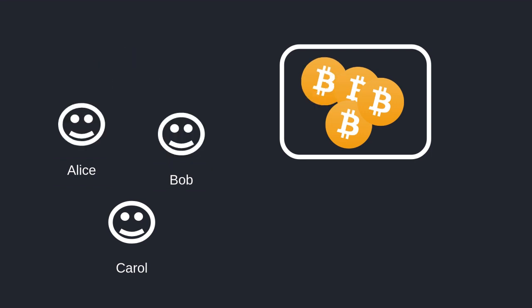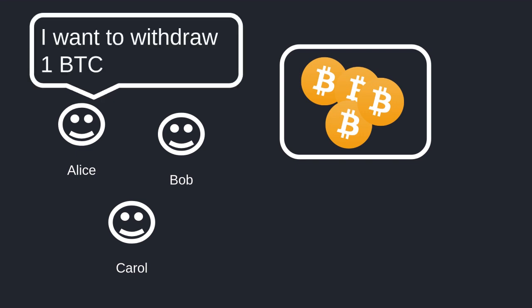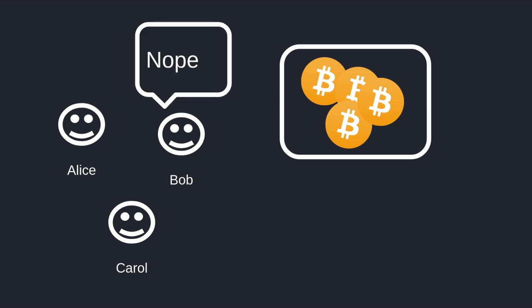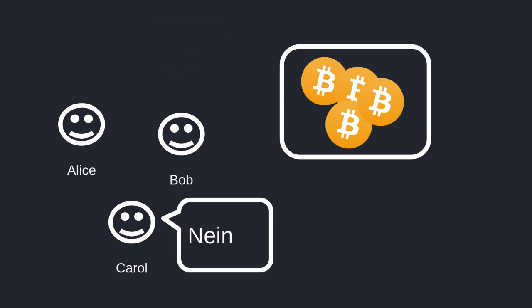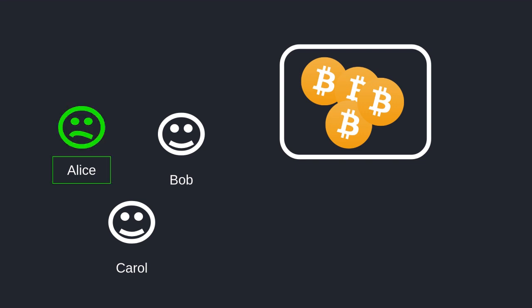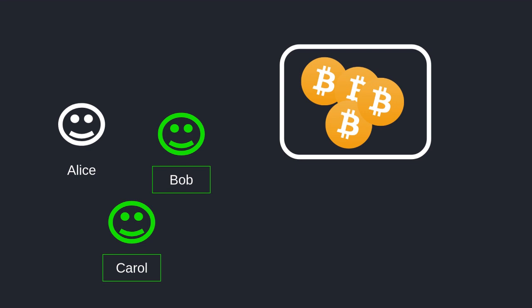What happens if Alice cannot get approved by the other owners? Alice says I want to withdraw one bitcoin, and this time Bob says nope. And Carol also says no Alice, you cannot withdraw one bitcoin. So in this case we only have one approval, which is less than the two approvals required to spend from this wallet. This is called a two out of three multisig wallet since it requires the approval of at least two owners out of the total three owners.